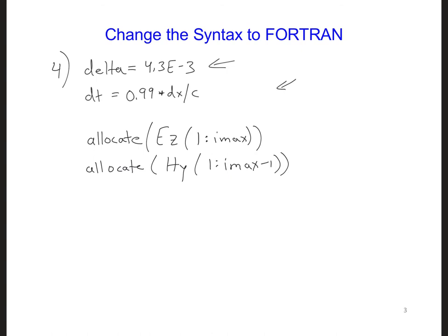Now this just allocates memory, so we separately need to initialize all the numbers in these arrays to 0. So a little bit later on, we can have ez, and colon here will just set all the values in that array, set them all at once, equal to 0. And the same thing with hy.